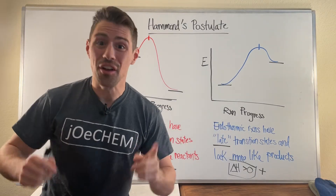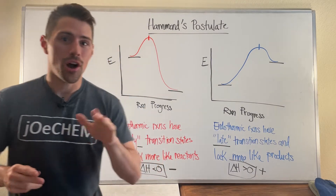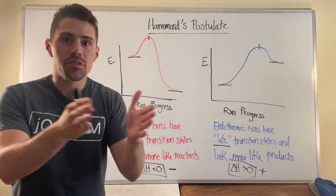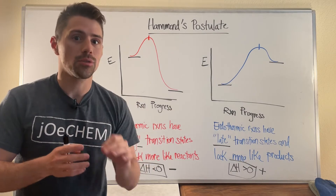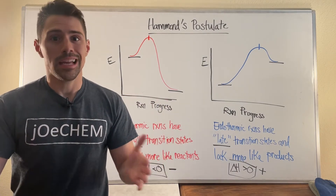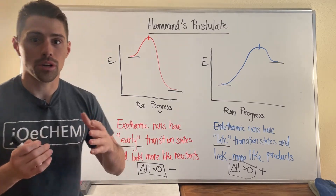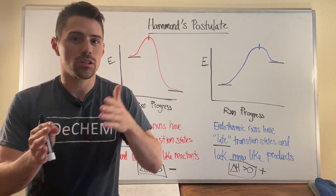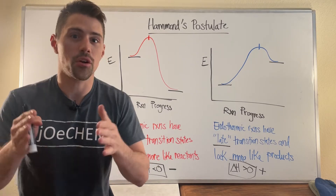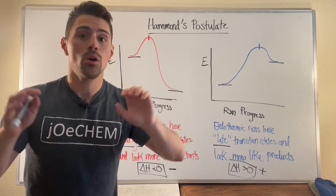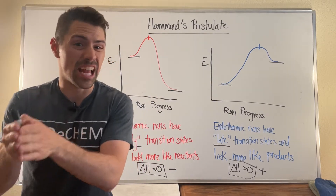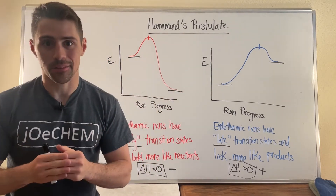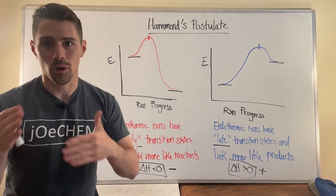Hey gang and welcome back for another video here on Jochem. We are super close to finishing out the alkanes series. If you've gone through the series chronologically, you just finished up learning about free radical halogenation with both chlorine and bromine, and this is a good time to talk about what is known as Hammond's postulate.